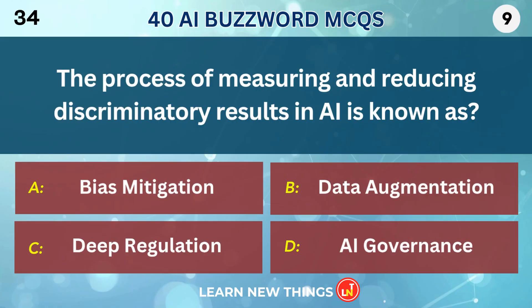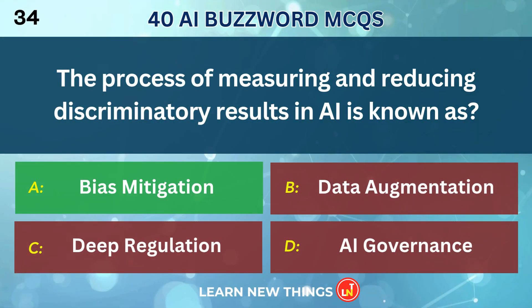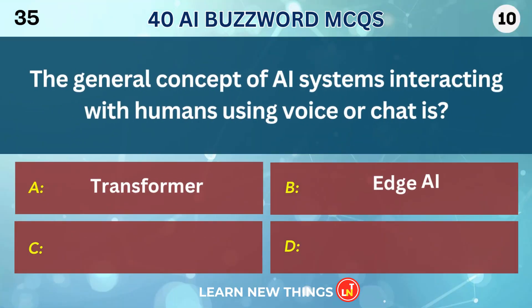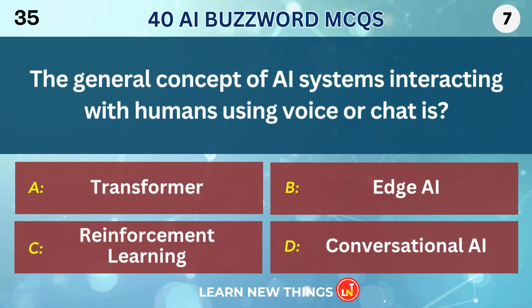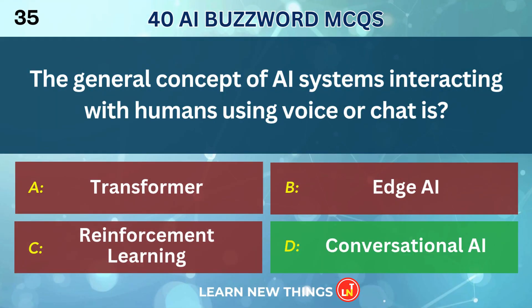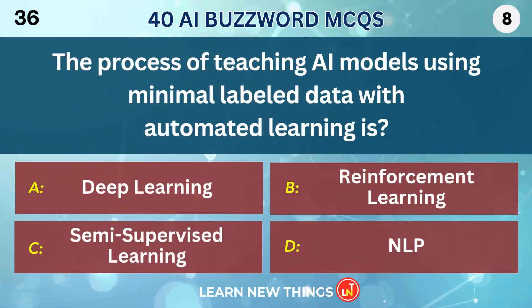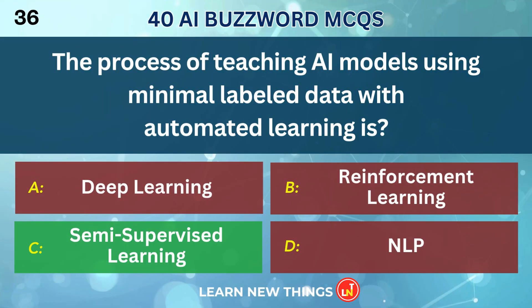The process of measuring and reducing discriminatory results in AI is known as Bias Mitigation. The general concept of AI systems interacting with humans using voice or chat is Conversational AI. The process of teaching AI models using minimal labeled data with automated learning is Semi-supervised Learning.